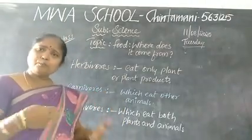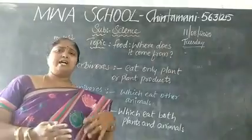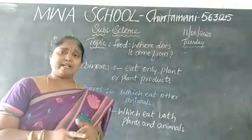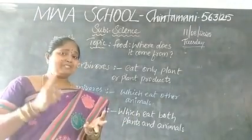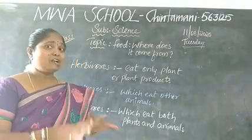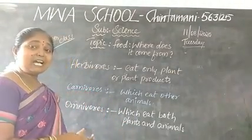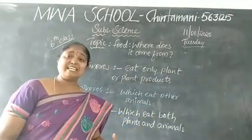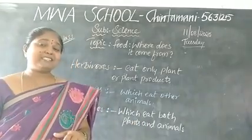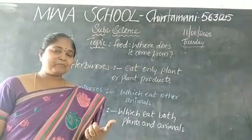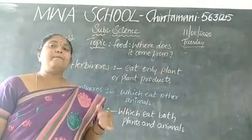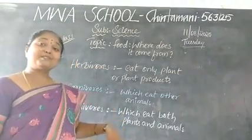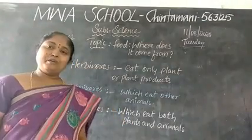Then animals which eat both plant products as well as other animals — flesh — are called omnivores. Animals which eat both plants and animals are known as omnivores.